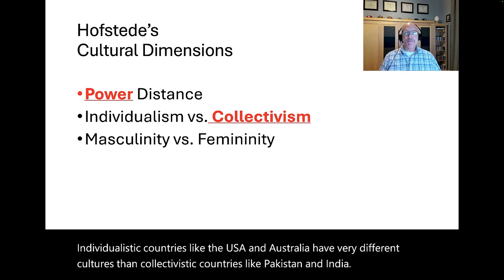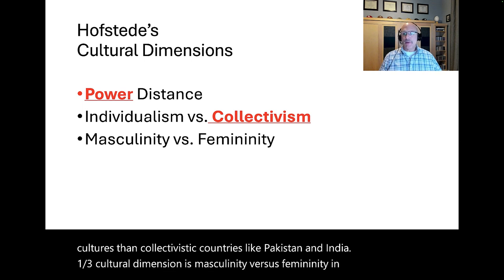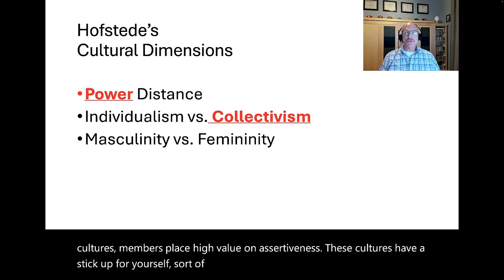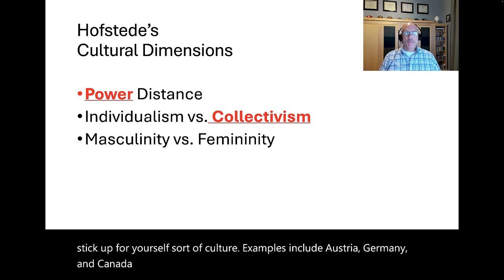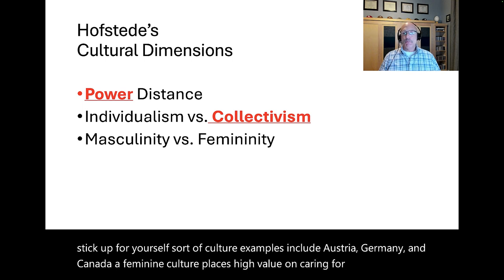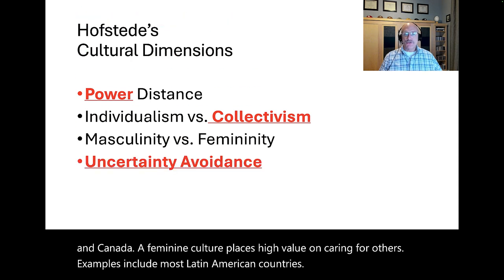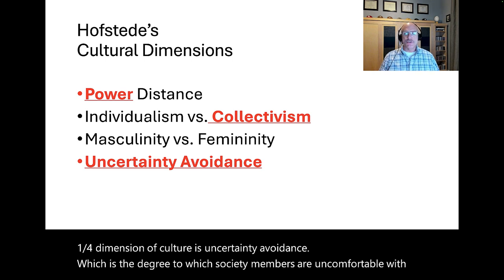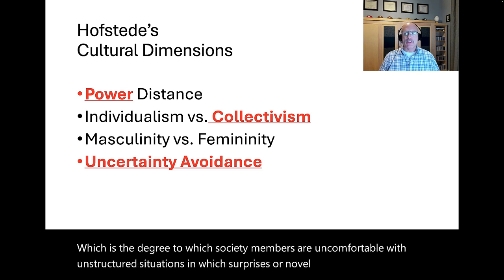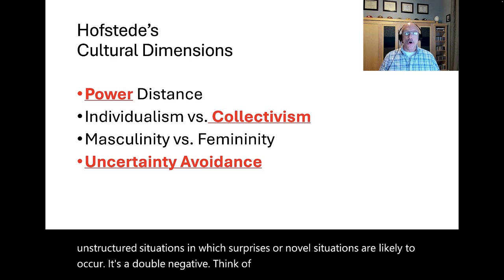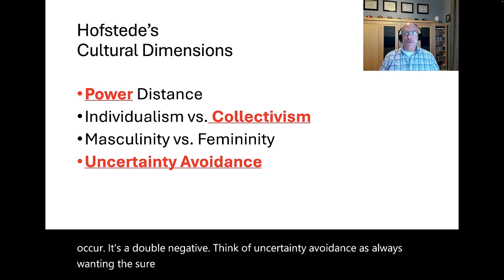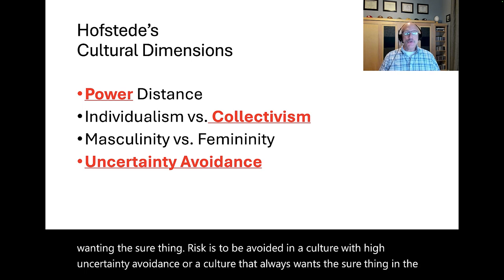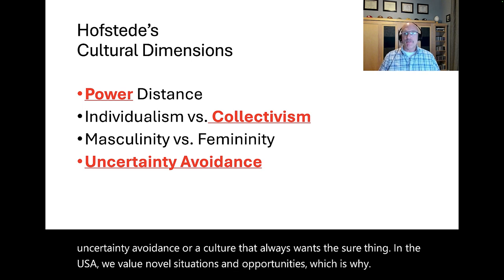A third cultural dimension is masculinity versus femininity. In masculine cultures, members place high value on assertiveness — a stick-up-for-yourself sort of culture. Examples include Austria, Germany, and Canada. A feminine culture places high value on caring for others; examples include most Latin American countries. A fourth dimension is uncertainty avoidance — the degree to which society members are uncomfortable with unstructured situations in which surprises or novel situations are likely to occur. Think of uncertainty avoidance as always wanting the sure thing — risk is to be avoided. In the USA, we value novel situations and opportunities, which is why entrepreneurship is such a vital part of our culture.